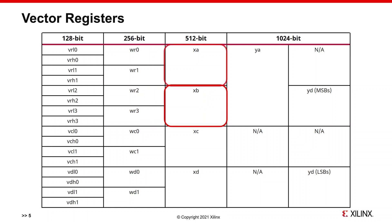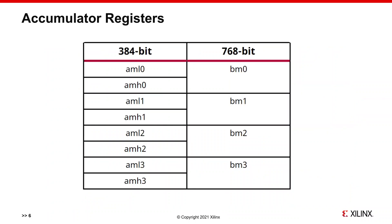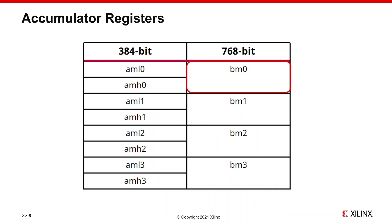X-groups make 1024-bit Y-registers. Note that Y-D LSBs come from X-D and MSBs come from X-B. Accumulator registers are used to store the results of the vector data path. AM registers are 384-bit wide and can contain 8 vector lanes of 48 bits. This is enough to handle 16x16-bit multiplication and accumulation results without bit overflow. An AM register can also contain 4x80-bit registers. Two AM registers can be bundled to form 768-bit BM registers.